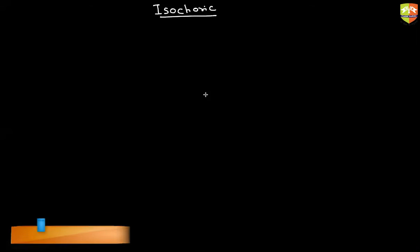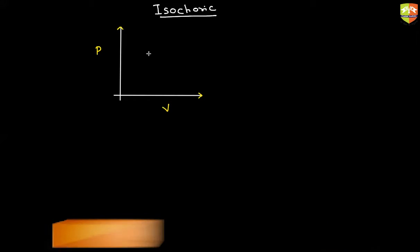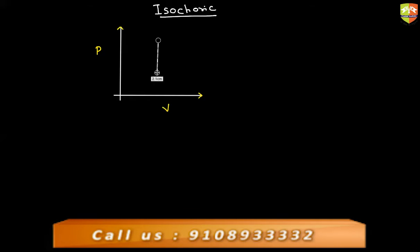Now please write down isochoric. How does it look in PV graph? Parallel to y axis. This is P, this is V and the graph will look something like this.